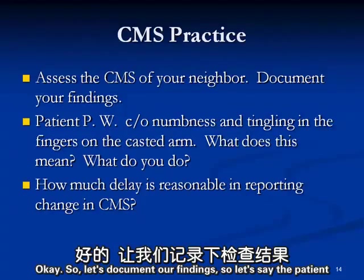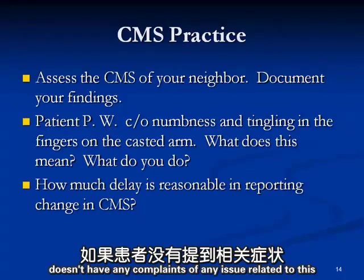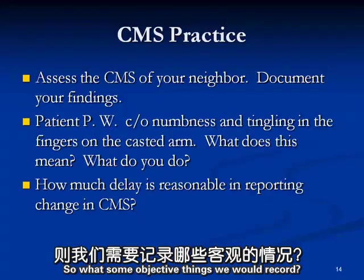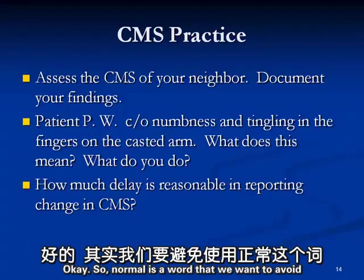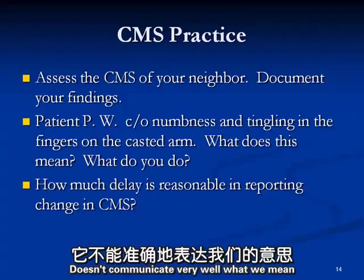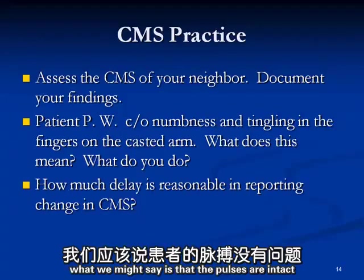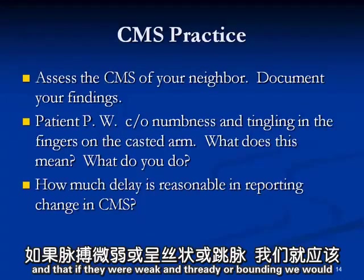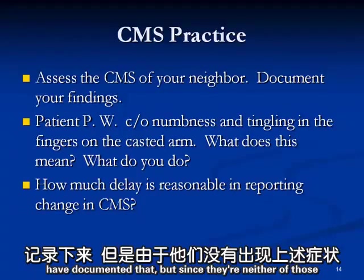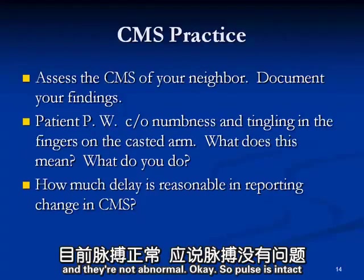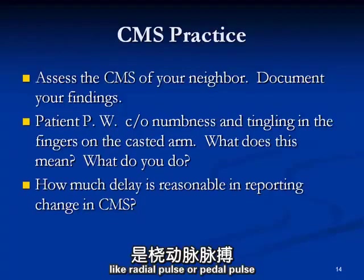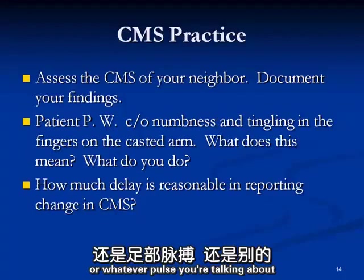Let's document our CMS findings. If the patient doesn't have any complaints related to this issue, what objective things would we record? 'Normal' is a word we want to avoid - it doesn't communicate well. In this case, we might say that the pulses are intact. If they were weak and thready or bounding, we would have documented that; since they're neither, we say 'intact' - that tells us they're present and not abnormal. We also want to say which ones: radial pulse, pedal pulse, or whichever you're talking about.